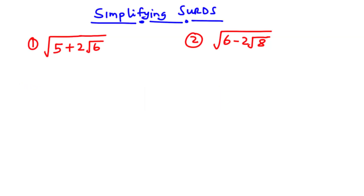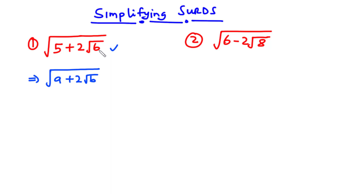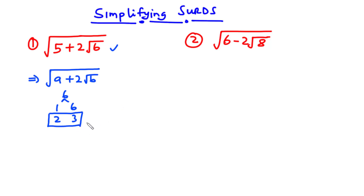For question number 1, if you have a set in the form square root of a plus 2 root b, you want to find the factors of b that add up to give you a. Let's focus on question 1 and consider the value 6. The factors of 6 are 1 and 6, and also 2 and 3. Now, 2 plus 3 equals 5, so we pick 2 and 3. So 5 equals 2 plus 3.